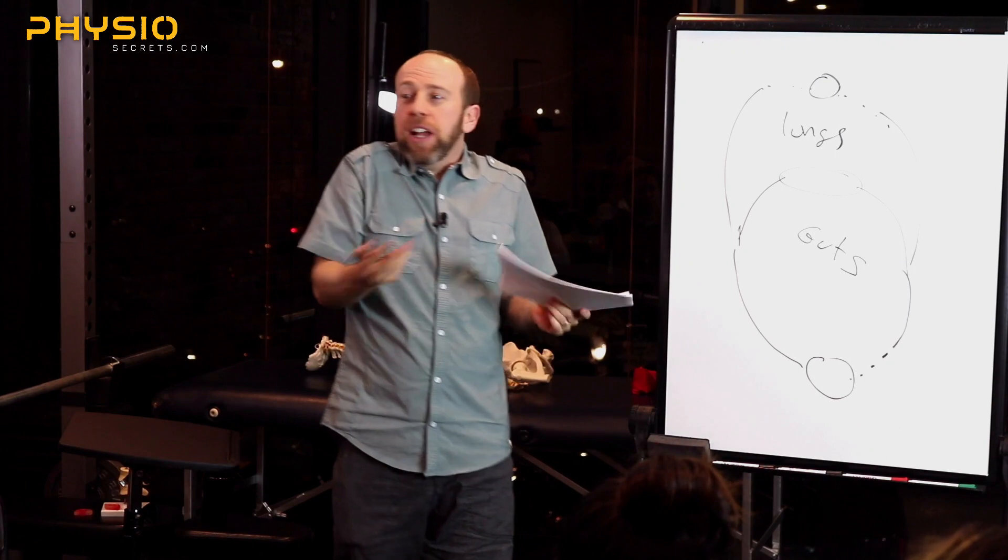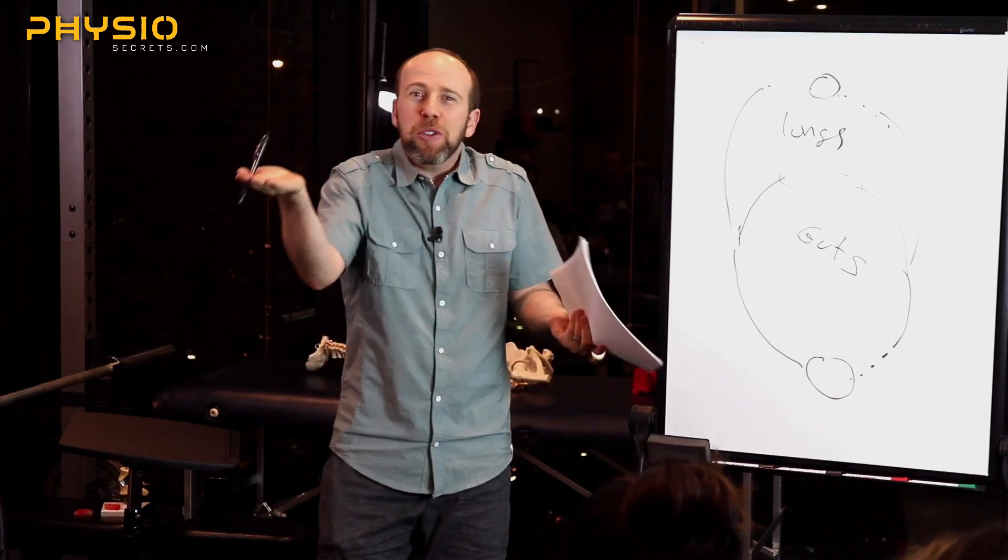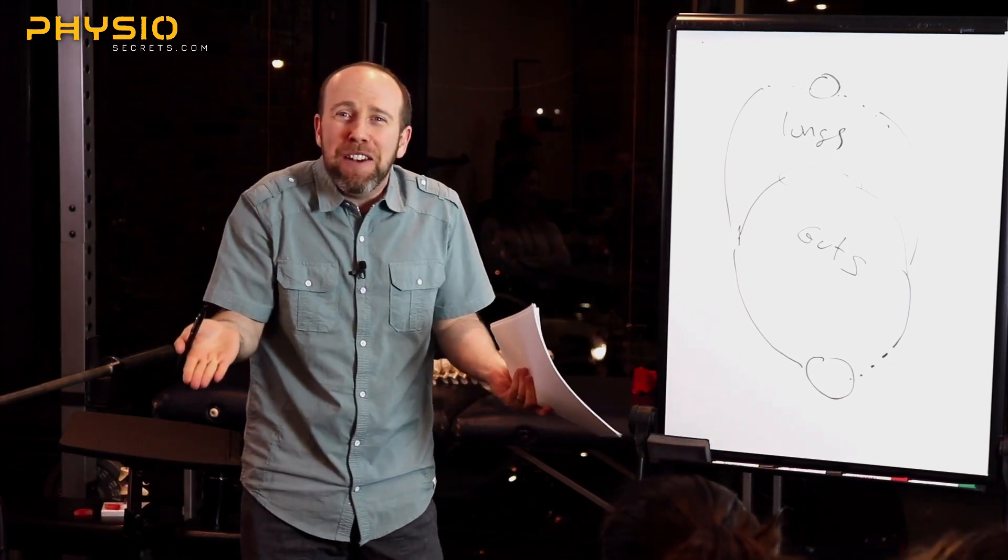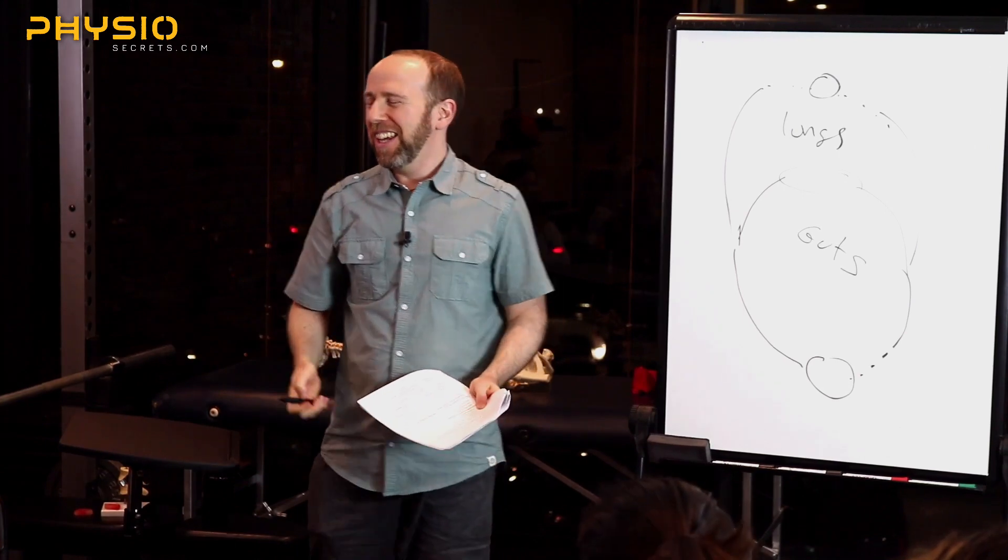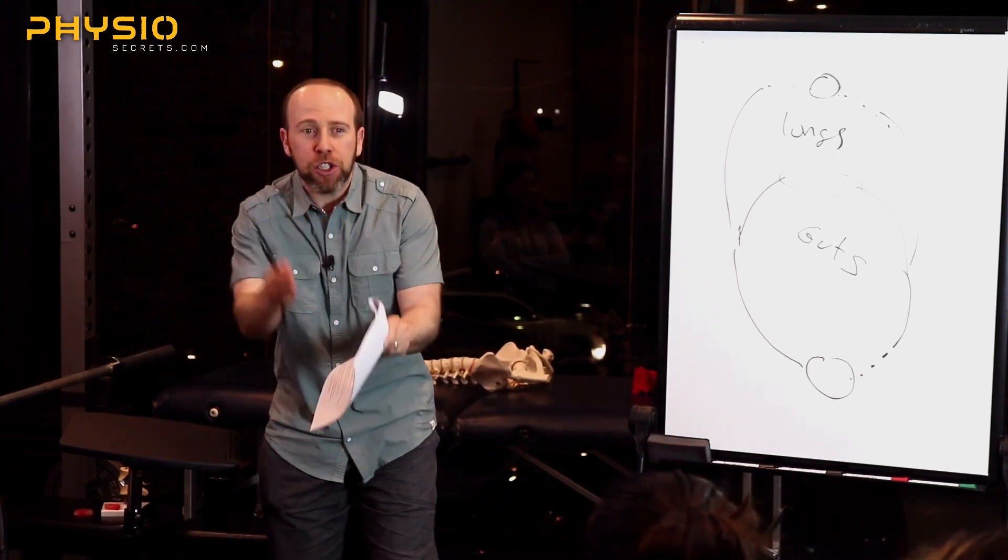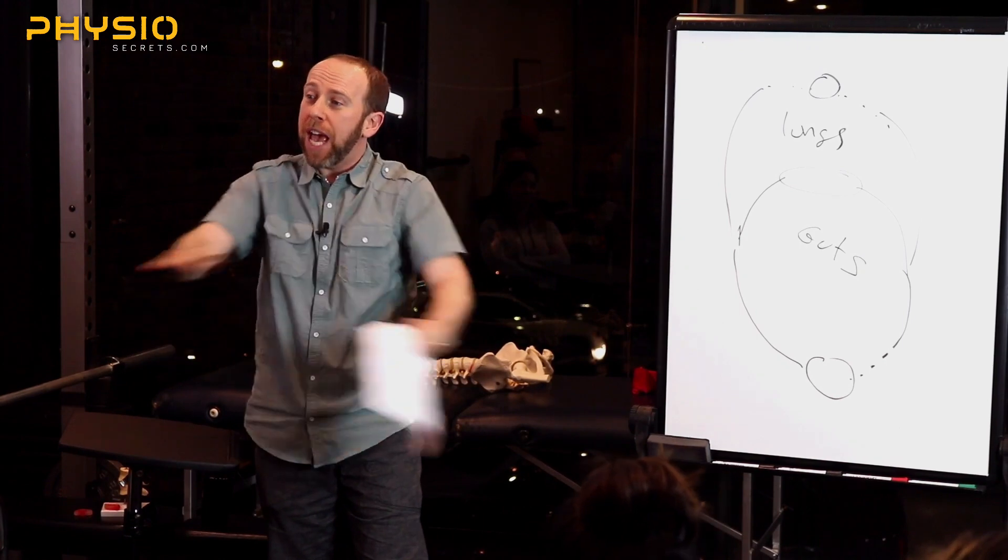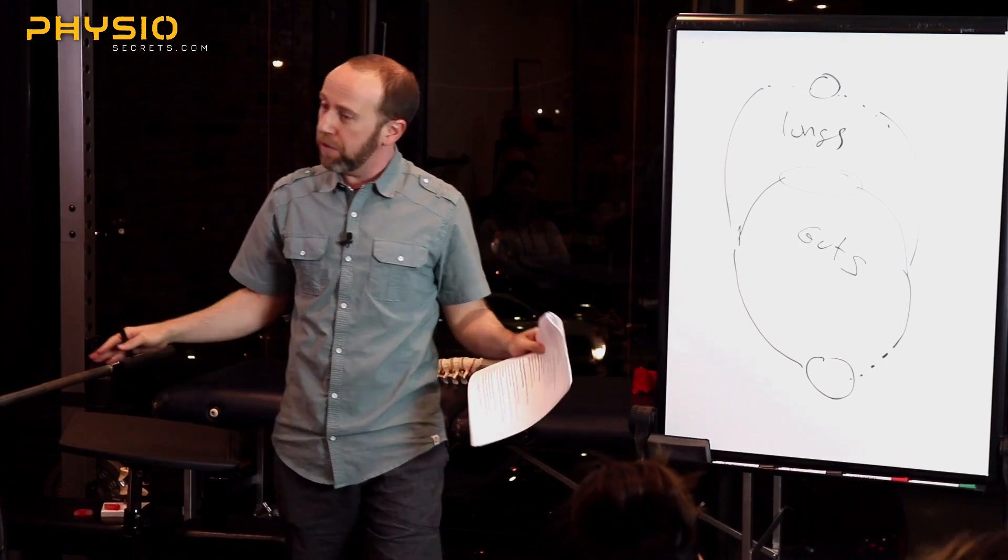Two, find me an x-ray of an elevated first rib. I should be talking to the camera because PTs are watching this. Find me an x-ray of an elevated first rib. If you look up first rib elevation in Google, which searches everything, you will not find a picture of an elevated first rib.